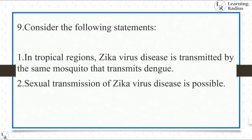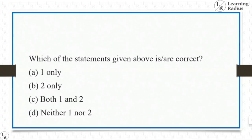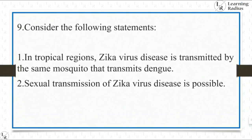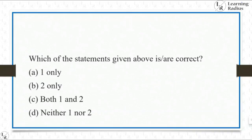Consider the following statements. Statement 1: In tropical regions, Zika virus disease is transmitted by the same mosquito that transmits dengue — right. Statement 2: Sexual transmission of Zika virus disease is possible — that is also right. Both statements are right, so the answer is C, both one and two.